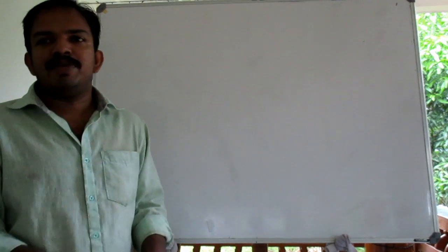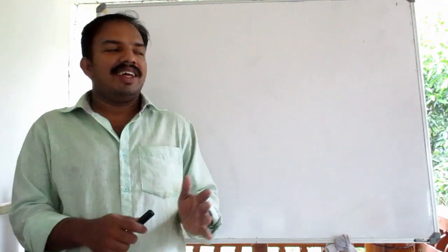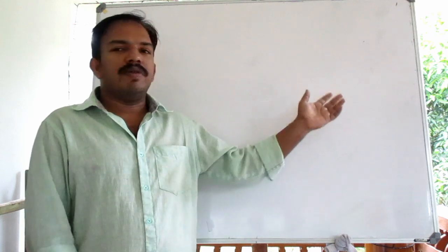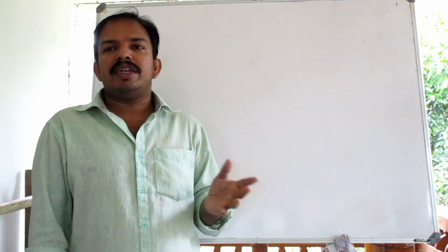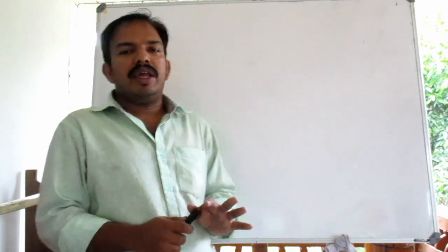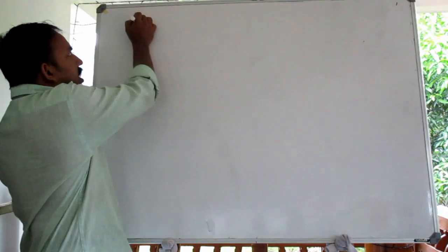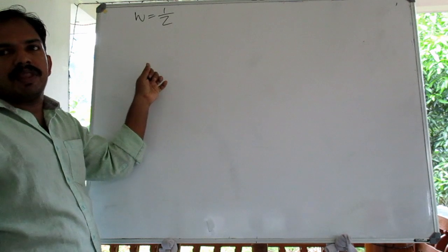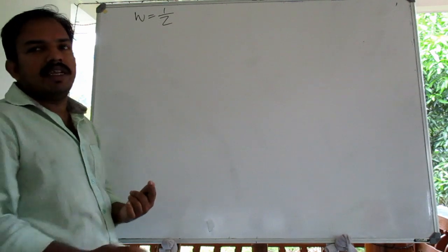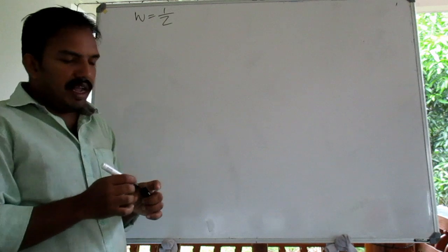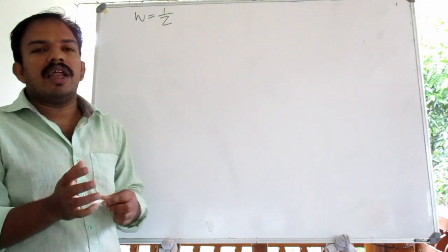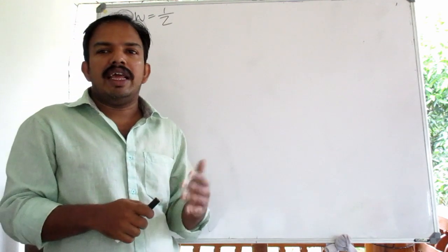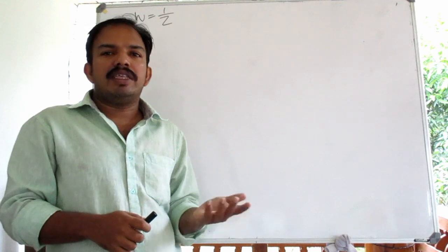We are studying the transformation W = 1/z. We will start the course and discuss the transformation W equal to 1 by z. This transformation maps circles and straight lines into circles and straight lines.